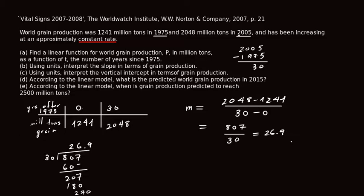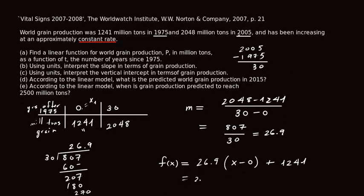So the slope is 26.9. Now we apply the point-slope formula. Using the point (0, 1241), f(x) = 26.9 times (x minus 0) plus 1241, which simplifies to f(x) = 26.9x + 1241. That's our formula and the answer to part A — we have found a formula for world grain production as a linear function.